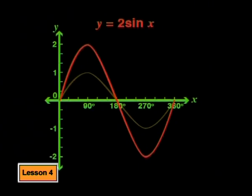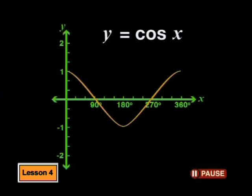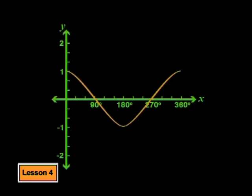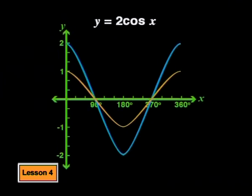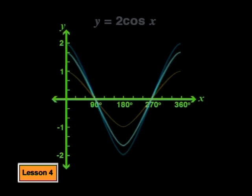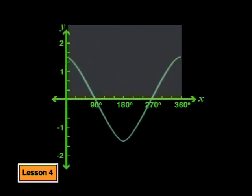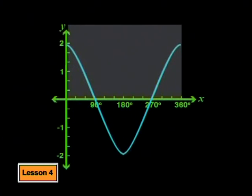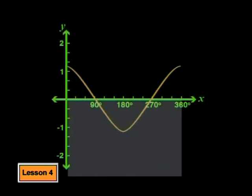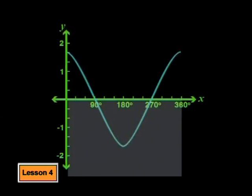Now let's look at the parent graph of y equals cosine(x). Changing all the y values of the parent graph by a factor of 2 changes it to y equals 2·cosine(x). The cosine graph has stretched in the same way as the sine graph — stretched down and up away from the x-axis. Where y values are positive, multiplying by 2 doubles them, stretching the graph vertically upwards. Where y values are negative, multiplying by 2 stretches the graph vertically downwards.